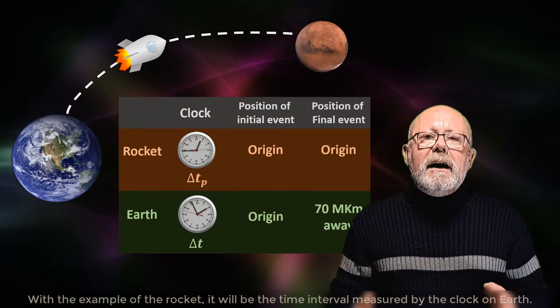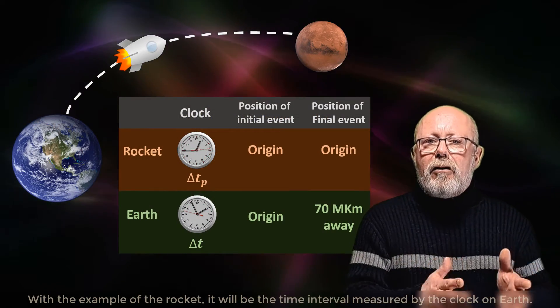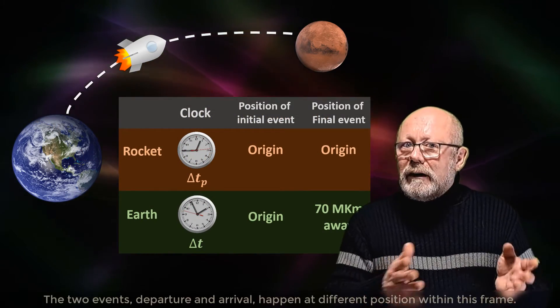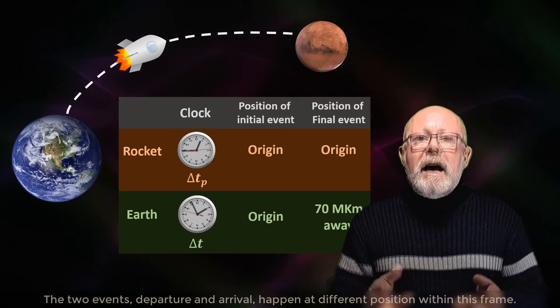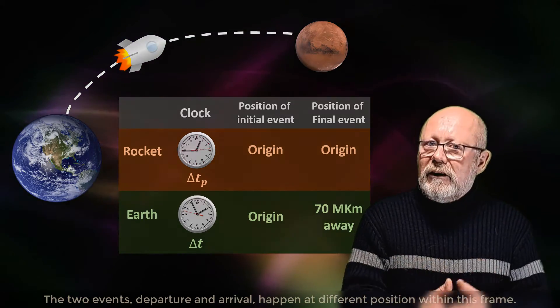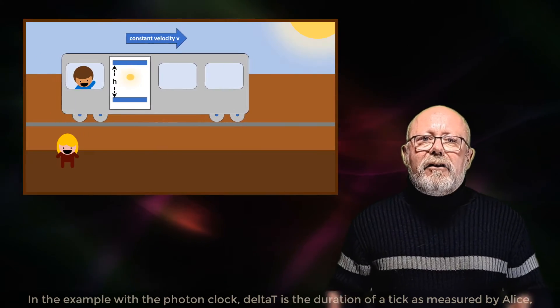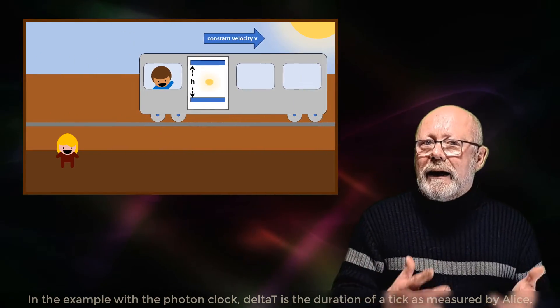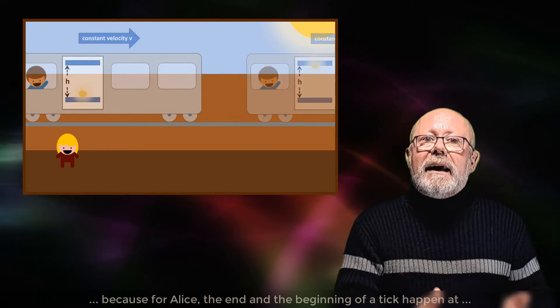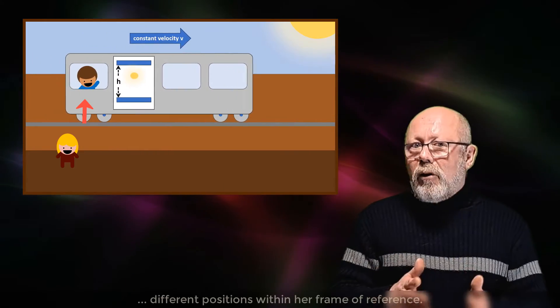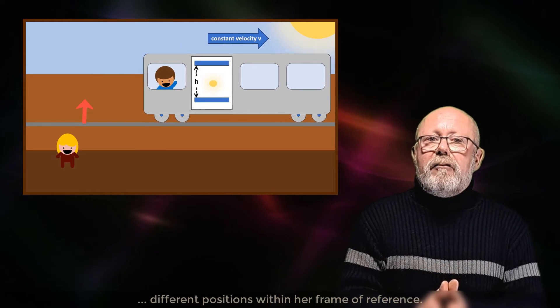delta t is the interval of time between the two events as measured from another inertial frame of reference. With the example of the rocket, it will be the time interval measured by the clock on Earth. The two events, departure and arrival of the rocket, happen at different positions within this frame. In the example with the photon clock, delta t is the duration of a tick as measured by Alice, because for Alice,